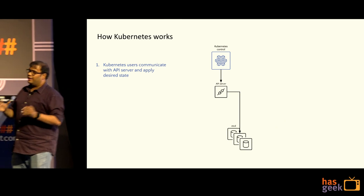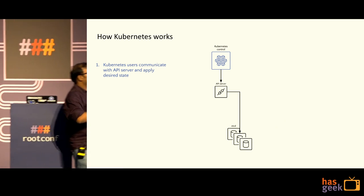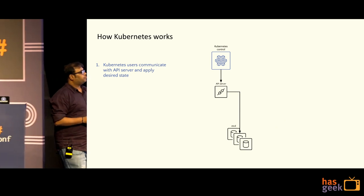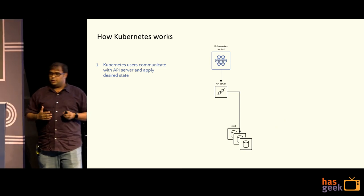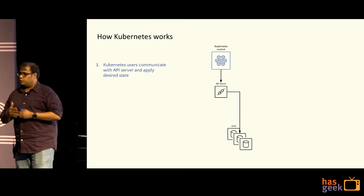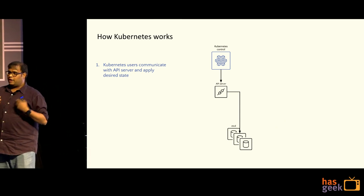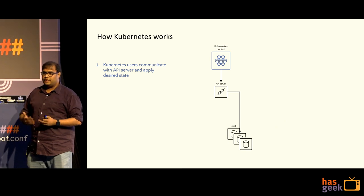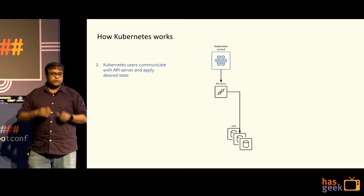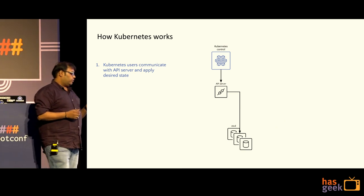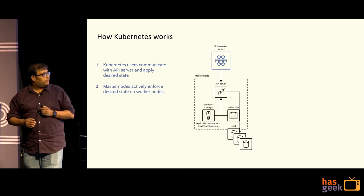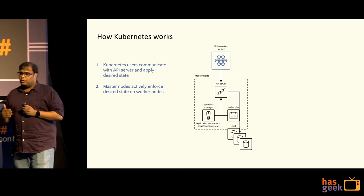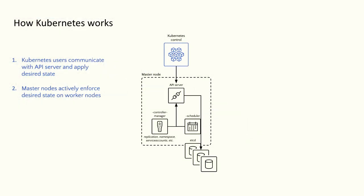Let me introduce how exactly Kubernetes works. There is a controller — you as a user submit a state. You design a YAML file, you define the desired state, and you submit it to the API server of Kubernetes, which is on the master. There is obviously a scheduler and a controller manager, which does the scheduling of the pods you have submitted.